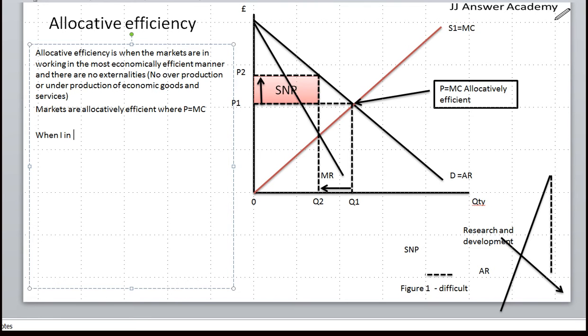Now when I introduce monopoly in this market, whatever commodity it may be, it will reduce quantity of goods produced from Q1 to Q2 so as to charge a higher price at P2 and make super normal profits.